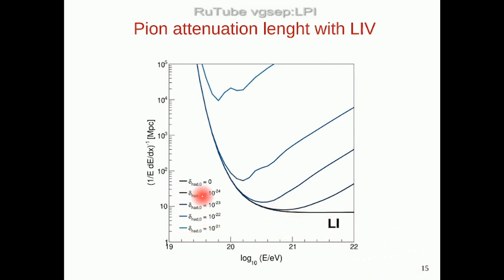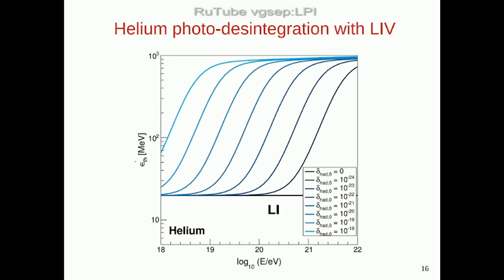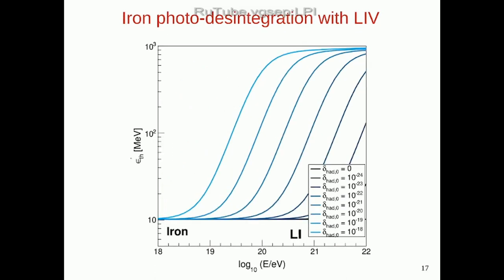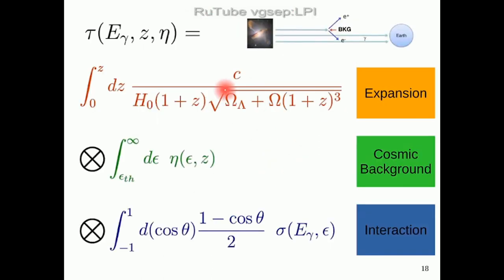Another example: the pion attenuation length as a function of energy. The black line is the Lorentz invariance case; adding certain values of the break, we see an increase again. Here delta_h stands for the hadronic sector and delta_γ for the electromagnetic sector. I'm showing just the values for the first term (n=0), but we have done the full calculation for all other terms. Another example: the helium photo-disintegration — this is the energy threshold for which the interaction occurs — and the proton. We did the calculation for several primaries and interpolate among them.